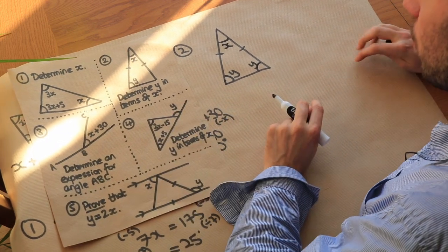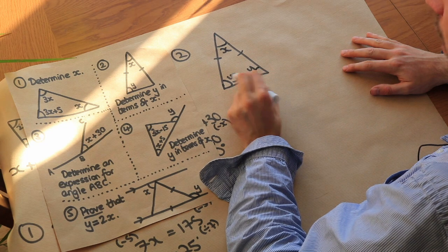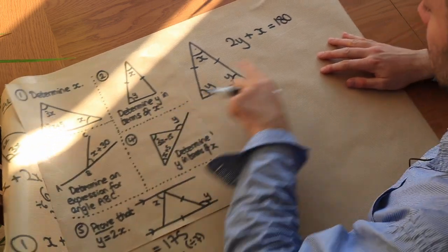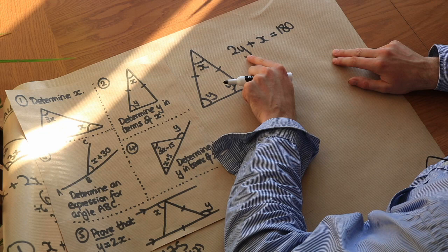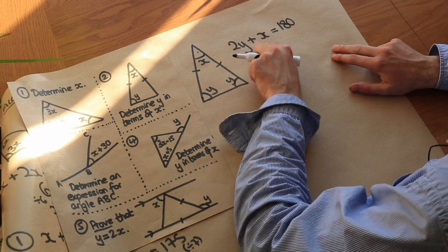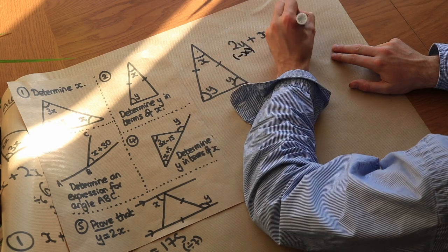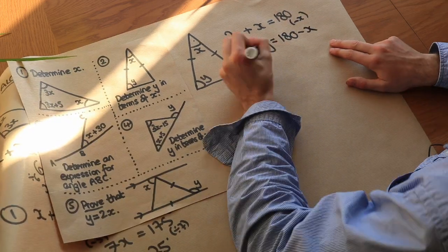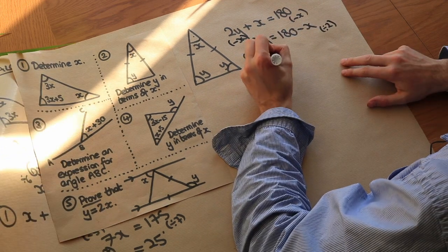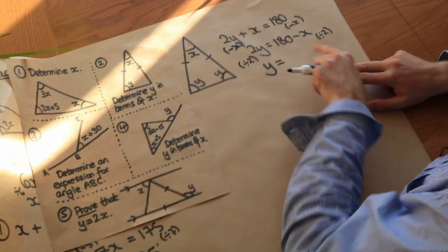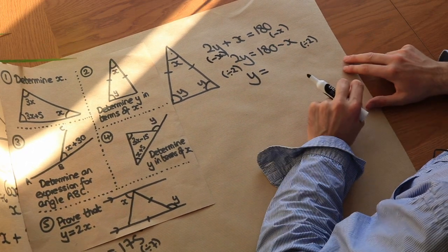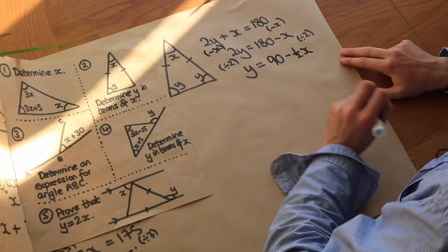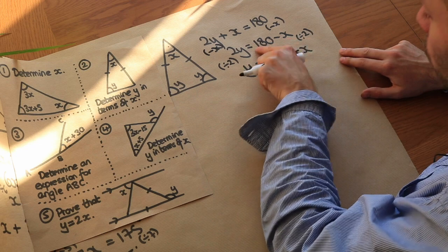We can say these angles add up to 180: y plus y plus x equals 180, which gives us 2y plus x equals 180. To make y the subject, we subtract x from both sides to get 2y equals 180 minus x. Then dividing both sides by 2, we can divide each term individually: 180 divided by 2 is 90, and halving x gives half x. So y equals 90 minus half x. You could also write it as (180 minus x) all over 2.